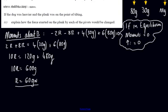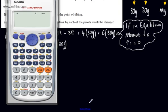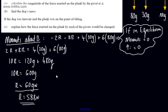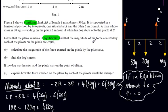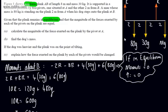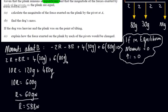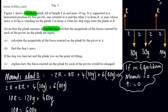I've left it in terms of g. If we wanted a numeric value, we do 60 × 9.8 = 588 Newtons. Often in questions you are allowed to leave it in terms of g. So R = 60g Newtons, and that is the reaction exerted on the plank by the pivot at A. Just be careful — sometimes the answer isn't R itself; it might be 5R or 6R, so do check. That part is done.